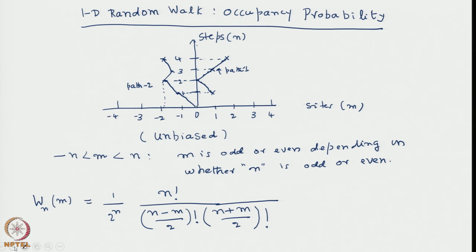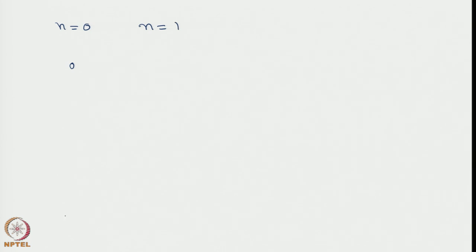We can calculate the mean, variances, and obtain plots of locations, and examine how it behaves as steps increase - all from W_n(m). To familiarize ourselves, let us do some estimation. For n equal to 0, the walker will be at site 0 only - he is at the origin with probability unity. For n equal to 1, he will be either at minus 1 or at plus 1 with probability half and half. Total probability is always conserved.